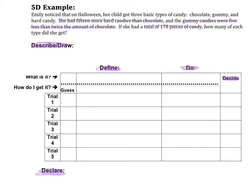If you notice on this table, there's a part that says guess. We've got chocolate, gummy, and hard candy. Out of those three things, one of them I'm going to start with and guess a number for each time. Once I guess that number, I'm going to use the information in the problem to figure out what the other ones would have to be. This is always the first step — take a couple seconds to figure out which of those things that we don't know should we start with. It says she had 15 more hard candies than chocolate, and the gummy candies were five less than twice the amount of chocolate. I'm going to use chocolate as my guess.